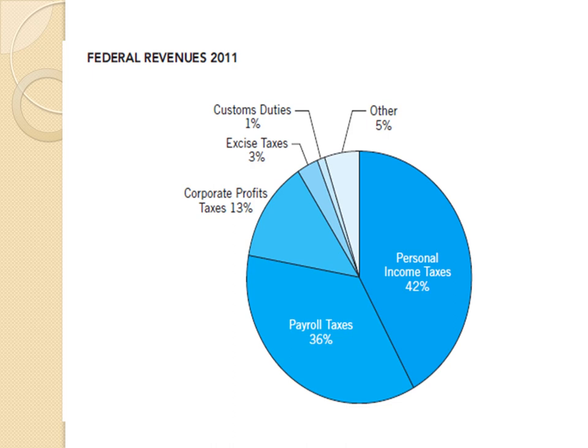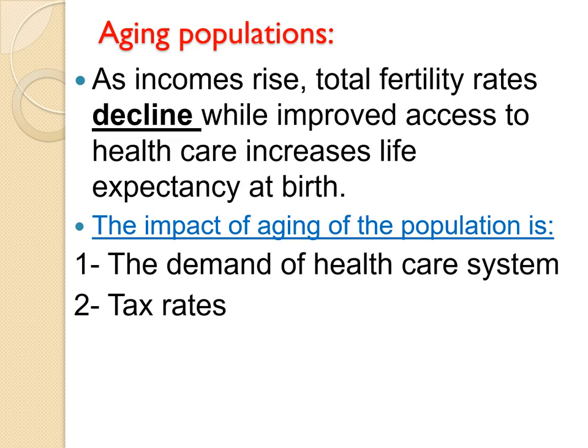Regarding aging population: as incomes rise, total fertility rates — measured by births per woman — decline, while improving access to healthcare increases life expectancy at birth. In the next 50 years, we can expect to see more older people living longer. The impact of aging population on public finance comes in two main items: demand for healthcare systems will increase, and tax rates for social security pensions are likely to rise.